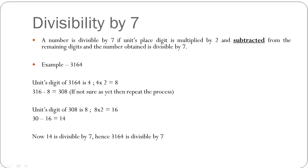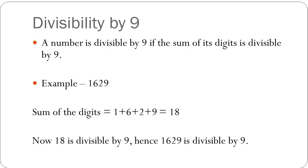Let's look at divisibility by 9. A number is said to be divisible by 9 if the sum of its digits is divisible by 9. Let us take the example of 1629. All you have to do is take the sum of all the digits: 1 plus 6 plus 2 plus 9, and the result is 18. Since 18 is divisible by 9, the number 1629 is divisible by 9.